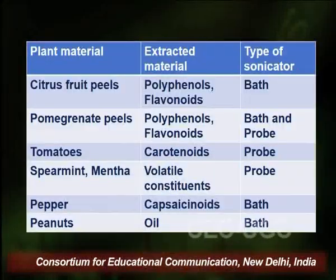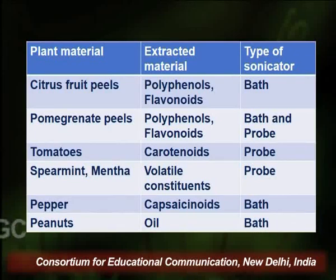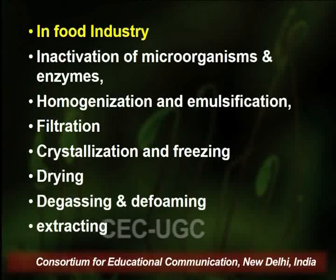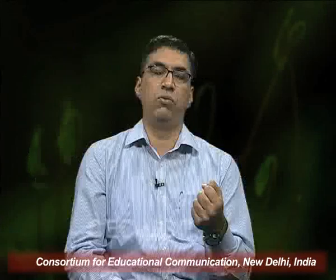Ultrasound-assisted extraction is largely used for extracting secondary metabolites from medicinal plants, fruits, and vegetables, and for extracting volatile and fixed oils from different plants. A table shows various examples of secondary metabolites extracted using different ultrasonicators. In the food industry, ultrasound is used for inactivation of microorganisms, homogenization and emulsification, filtration, co-crystallization, freezing, drying, degassing, and defoaming. Other uses include cleaning, degassing of solvents, accelerating chemical reactions, and liposome formation.